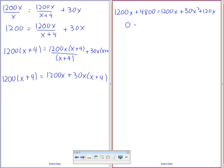Everything's going to move over to the left. That changes to 0 equals 30x squared plus 120x plus 1200x minus 1200x minus 4,800. So 0 equals 30x squared plus 120x minus 4,800. Did everyone get that or something close to it?